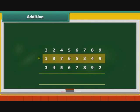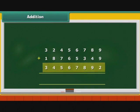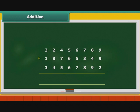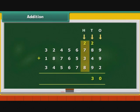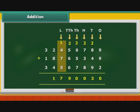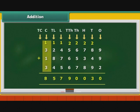Let us now learn to add large numbers. We begin with the addition of three large numbers: 32456789, 18765349, and 34567892. Draw the Indian place value chart. Arrange the numbers one below the other. Add the numbers starting with the digits at the ones place, then proceed to tens place, hundreds place, and so on. The sum is 85790030.